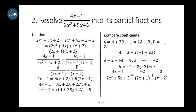Using substitution, we make b the subject from the second equation: b equals minus 1 minus 2a. Substituting into the first equation: 4 equals a plus 2(minus 1 minus 2a). Opening the bracket: 4 equals a minus 2 minus 4a, which gives minus 3a minus 2 equals 4, so minus 3a equals 6.